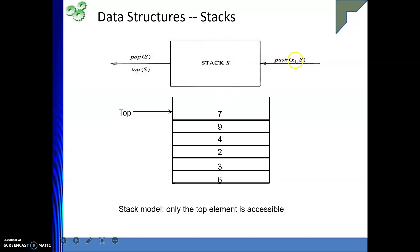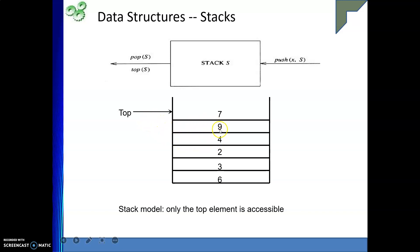Let's see a visual example. We have a stack with elements 6, 3, 2, 4, 9, 7 — top is pointing to 7. If I do a pop, 7 comes out and top moves down to 9. Pop again — 9 comes out and top moves to 4. Now if I push 1, it goes on top of 4 and top points to 1.